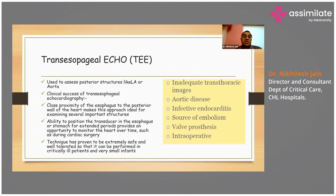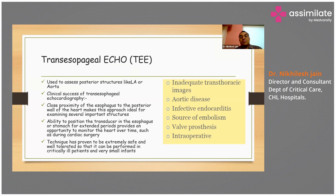Transesophageal echo (TEE) is used to assess posterior structures like the left atrium or aorta. Because of the close proximity of the esophagus to the posterior wall of the heart, it is ideal for examining certain important structures. The transducer can be positioned in the esophagus or stomach for extended periods, providing an opportunity to monitor the heart over time, such as during cardiac surgery. It is extremely safe, well tolerated, and can be performed in critically ill patients and very small infants.